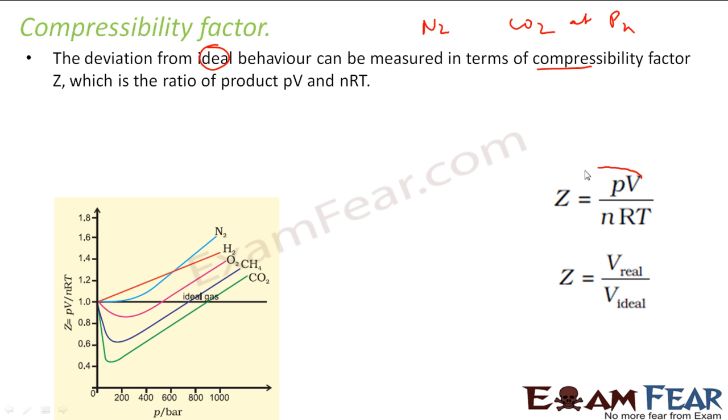And this is nothing but ratio of PV by nRT. Also, we can find the deviation by volume which is occupied real by volume ideal. So really they should occupy x volume and ideally they should occupy let's suppose y volume, x by y is the value of Z. There are two different ways to find the value of compressibility factor.